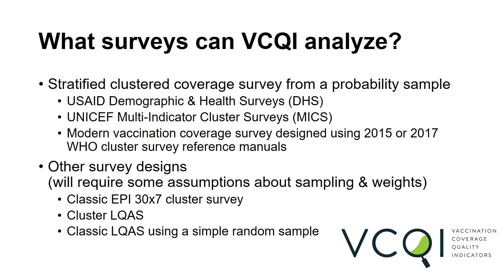VIKI is designed to analyze data from cluster surveys that provide results for one or more strata and use a probability sample. Relevant data sources could include USAID DHS surveys, UNICEF MICS surveys, and WHO's Expanded Program on Immunization surveys designed using recent guidance. VIKI could also be used to analyze data from older surveys or those with simpler designs, although this may require some strong assumptions.